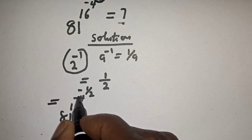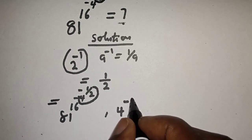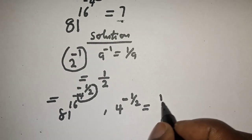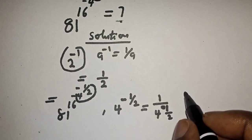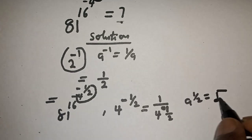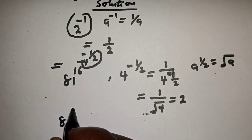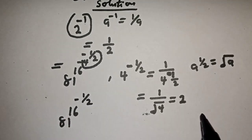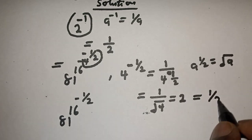Let's work with these two exponents again: 4 raised to power minus 1 over 2. This is equal to 1 over 4 raised to power 1 over 2. Take note that if you have a raised to power 1 over 2, this is equal to the square root of a. So square root of 4 is 2, and this is equal to 1 over 2. So we now have 81 raised to power 16 raised to power minus 1 over 2.